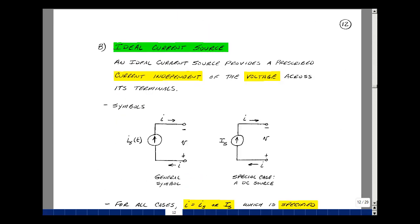Next, let me define an ideal current source. This provides a prescribed current independent of voltage across its terminals. Look at this and look at the previous page. You see that the word current is replacing the word voltage and vice versa. In circuit theory, this is called duality. We'll see this over and over again in different types of electric circuits.